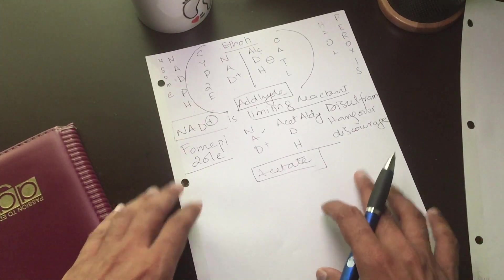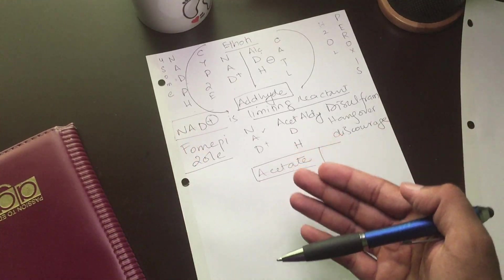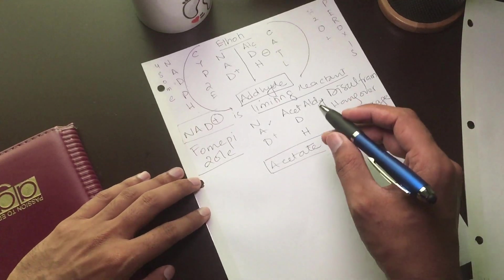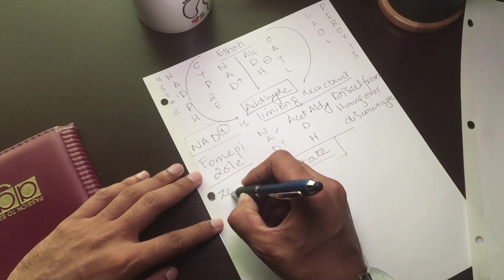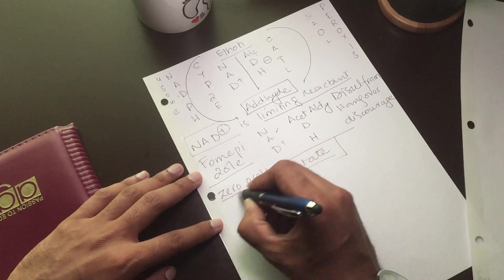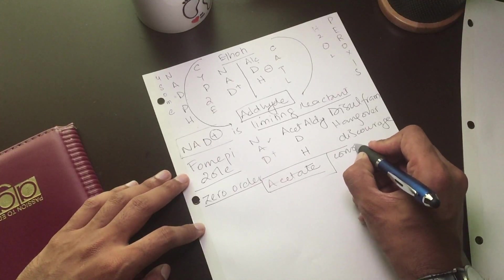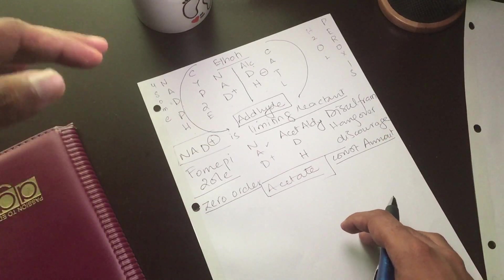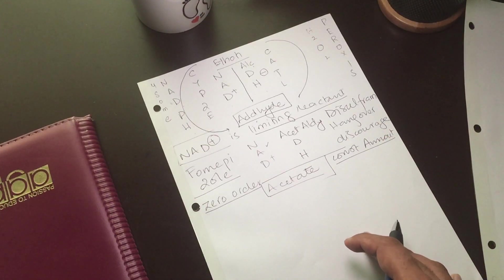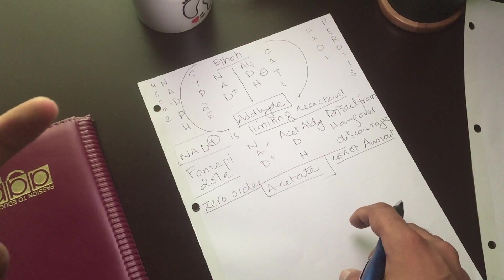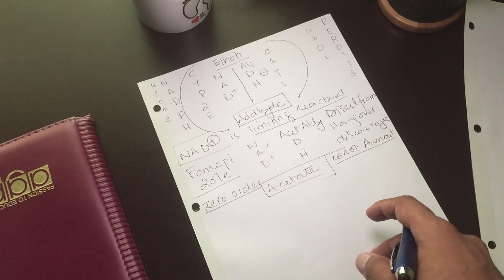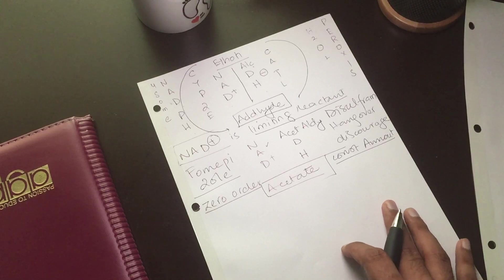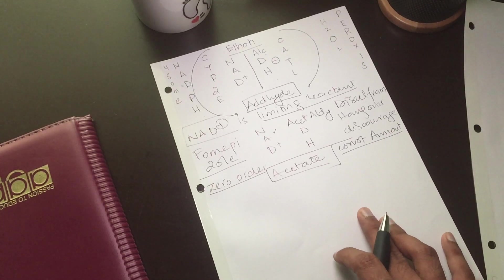The diagram represents how alcohol is metabolized in the body and the different pathways involved. Alcohol metabolism follows zero-order kinetics, meaning a constant amount of alcohol is removed from the body regardless of the dose — whether you take one shot or a large quantity.